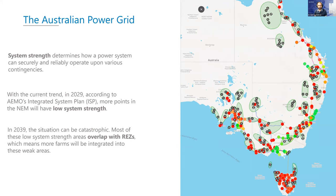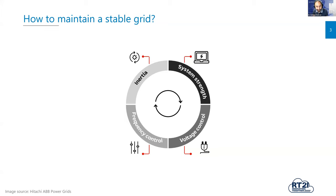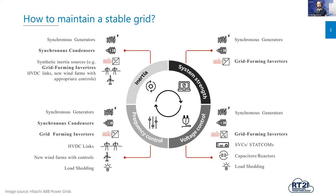There are four pillars required to maintain a stable grid: system strength, voltage control, frequency control, and inertia. Different equipment delivers these services, and synchronous generators used to deliver all of them. With retiring synchronous generators, we need more innovative ways of providing these services. Grid-forming inverters in particular are one of the most promising assets, potentially capable of providing all of these services in the future. Synchronous condensers are also gaining popularity, but inverter-based technologies and IBRs are the way to go. At Monash, the focus is on various technologies around IBRs and grid integration of renewable energies, looking at two types of inverters: grid-following and grid-forming.